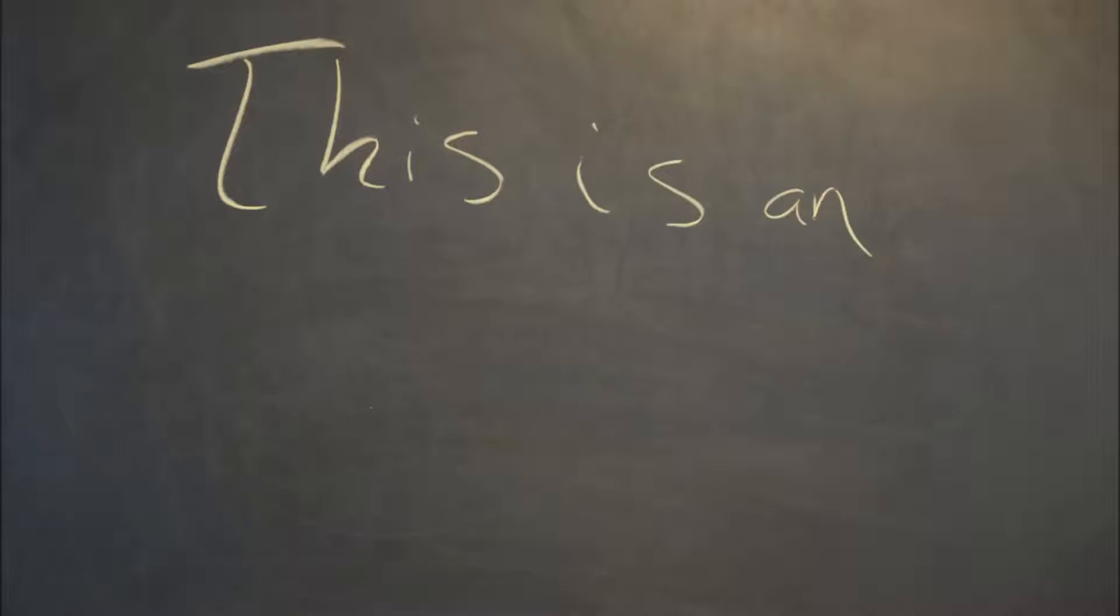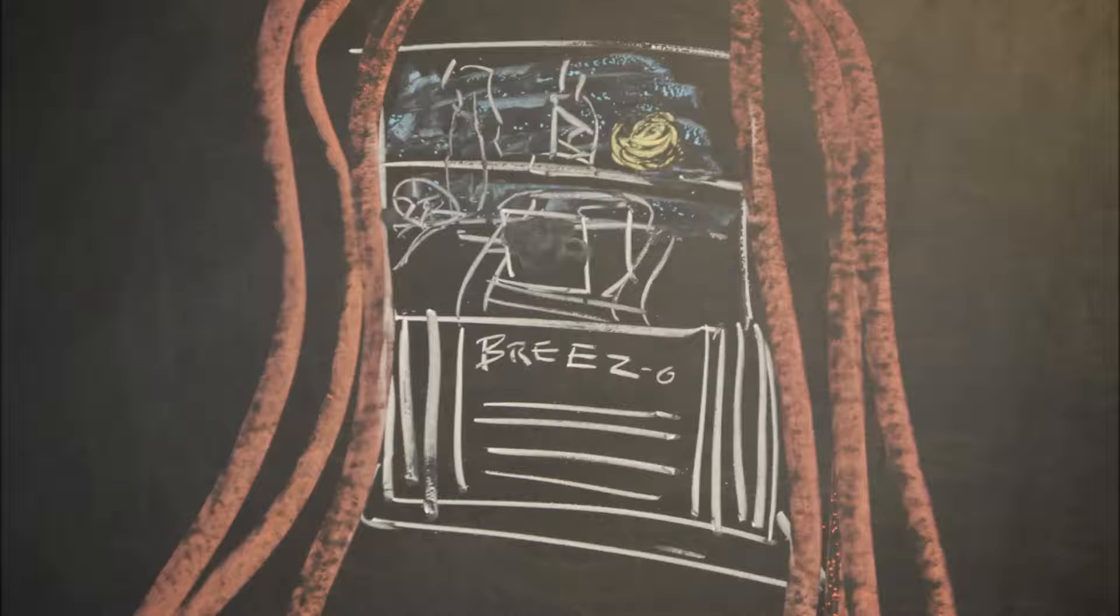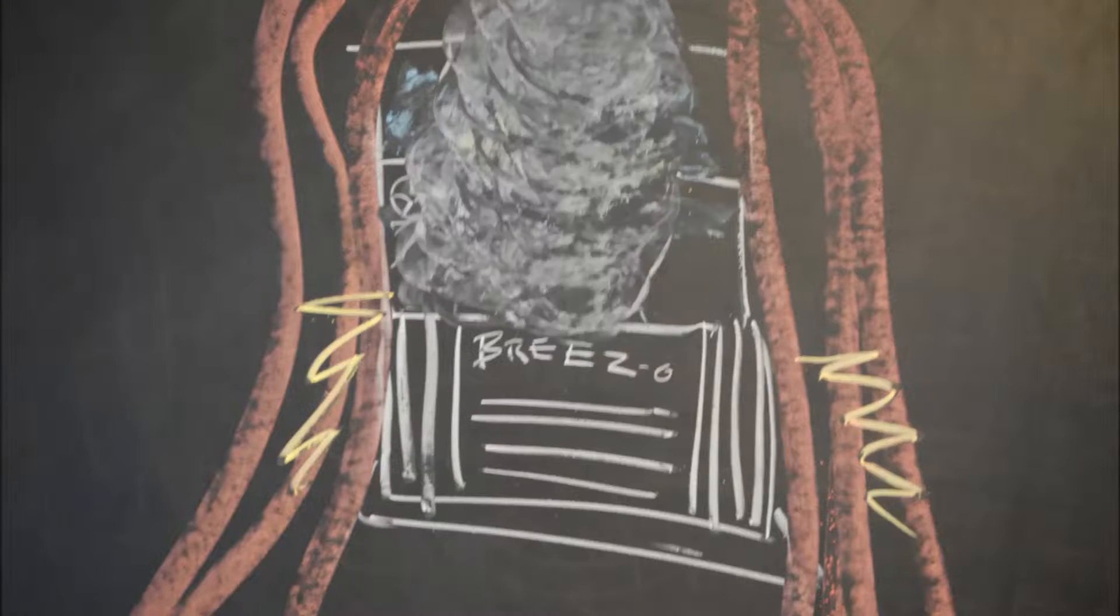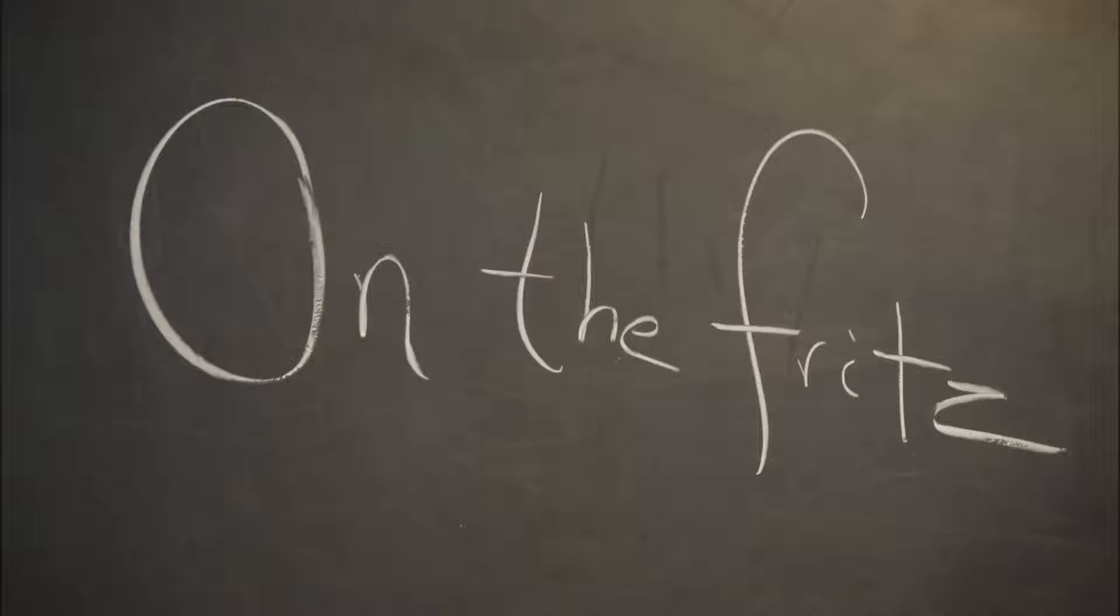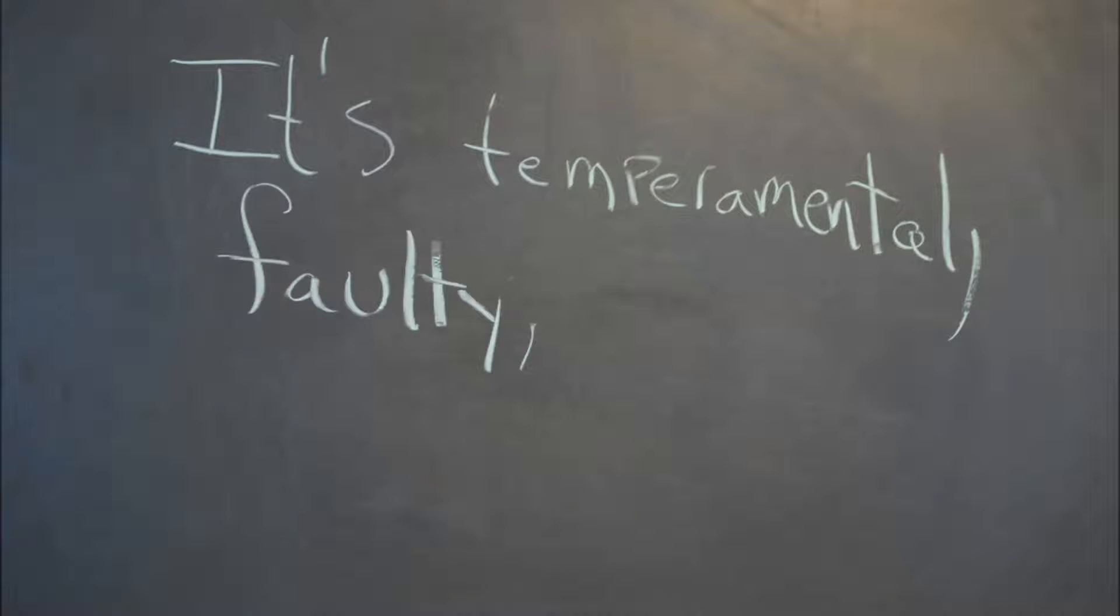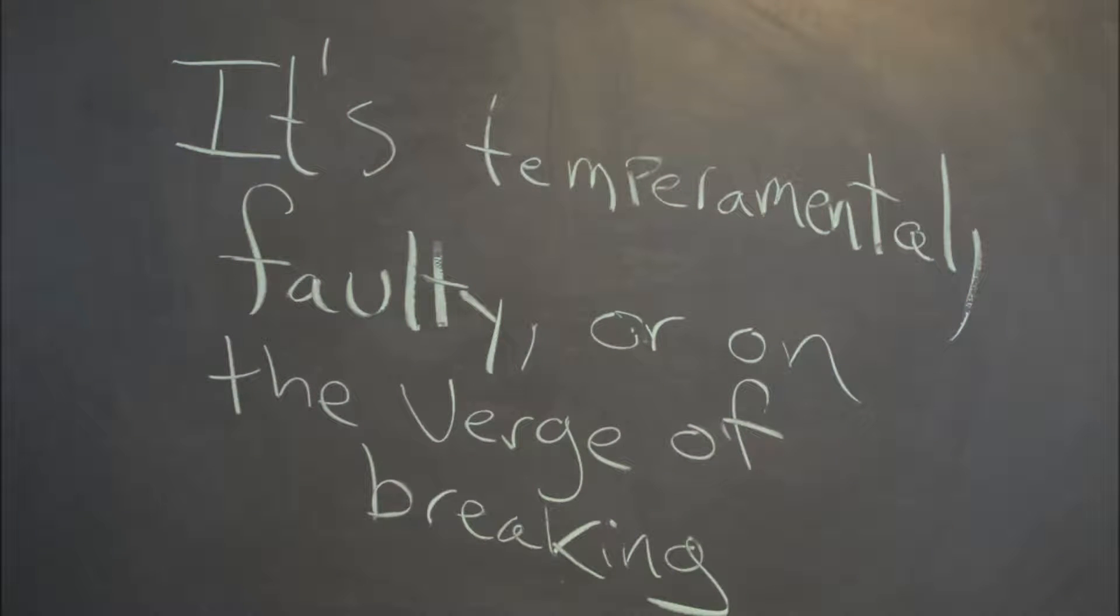Jimothy, this is an excellent question, because here in Chicago, we're just starting to get into air conditioner season, and mine happens to be just that, on the fritz. So for those of you that aren't aware of this idiom, when a machine or device is on the fritz, it means it's temperamental, faulty, or on the verge of breaking, if it isn't already broken.